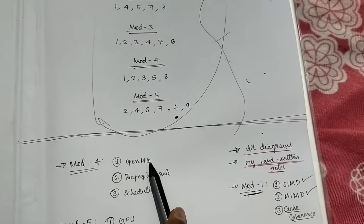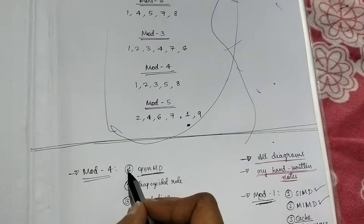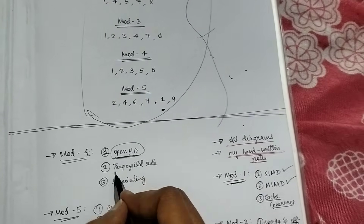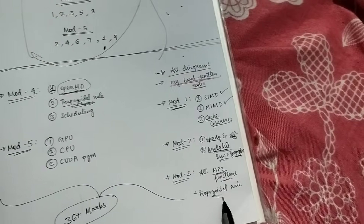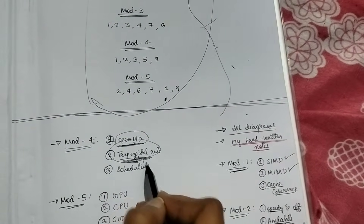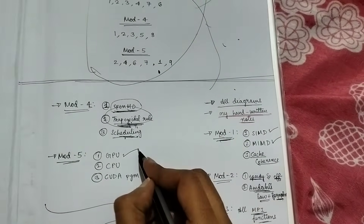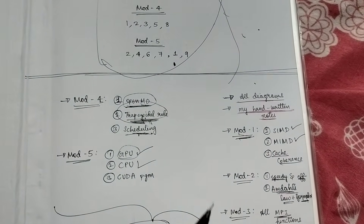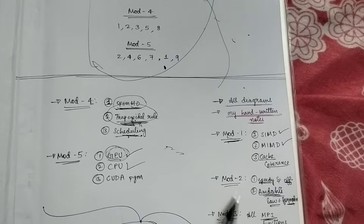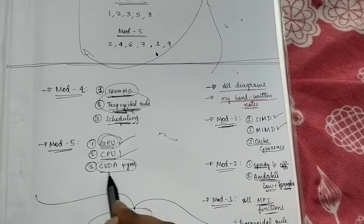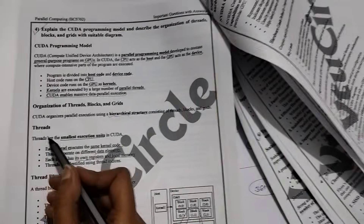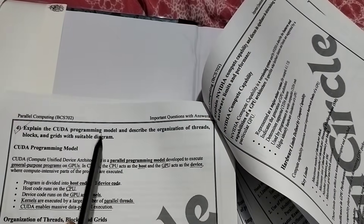For the fourth module, learn about OpenMP — the very first question in the fourth module. Learn that, and also the trapezoidal rule continuation given in the fourth module. Then learn about scheduling — there are four types: static, dynamic, and others. For the fifth module, learn everything about CPU and GPU. Whatever question they ask, write the answer about GPU and CPU. Also learn the CUDA question — it's about threads, thread blocks, and grid. Learn that question — it's important.